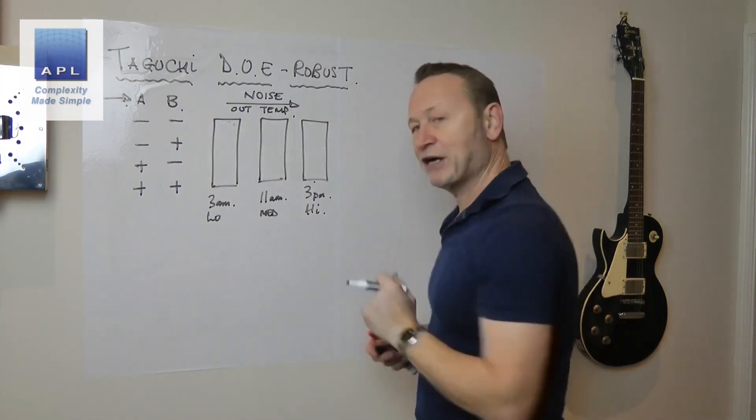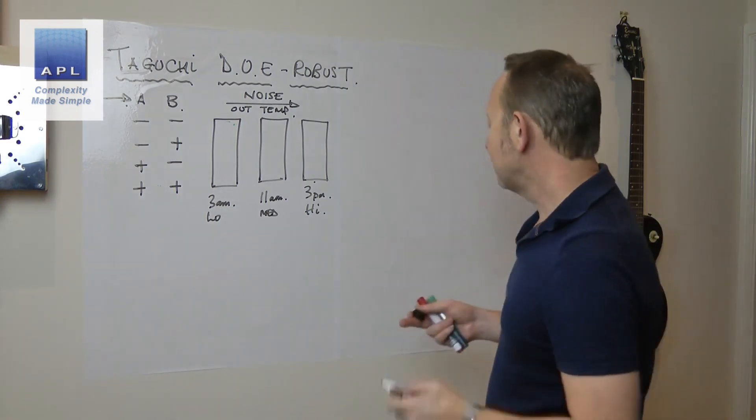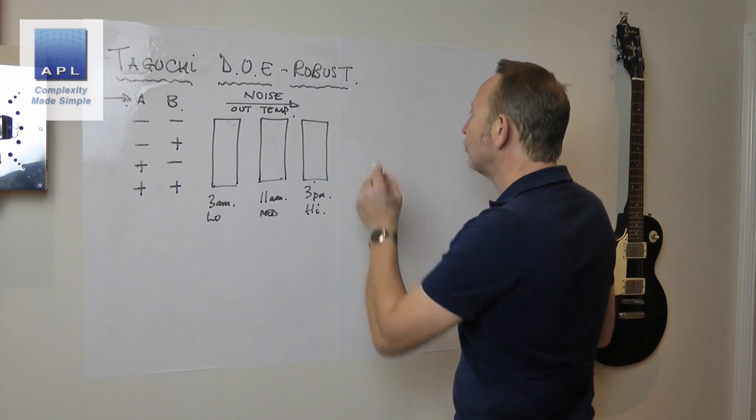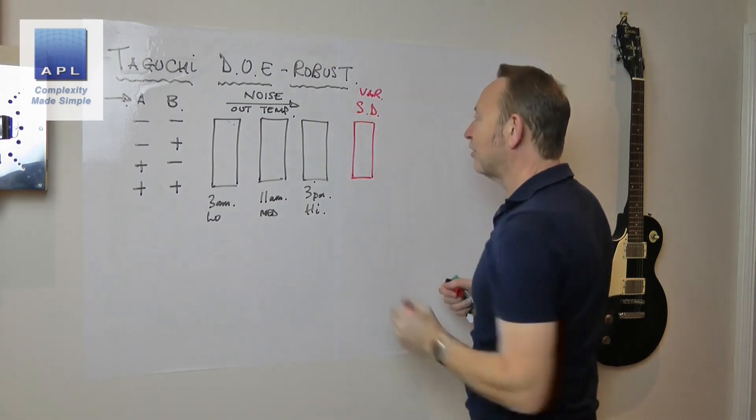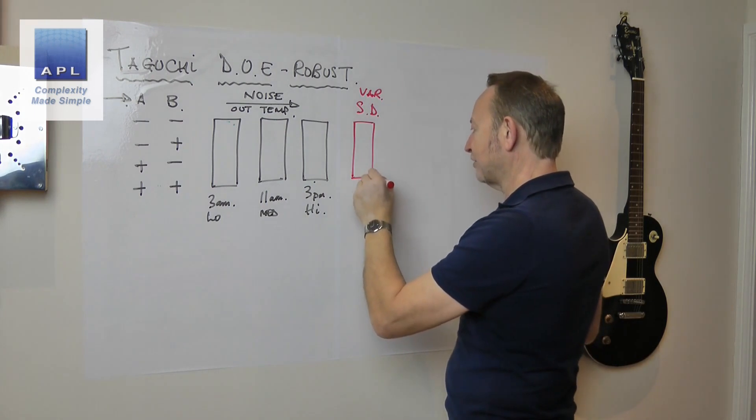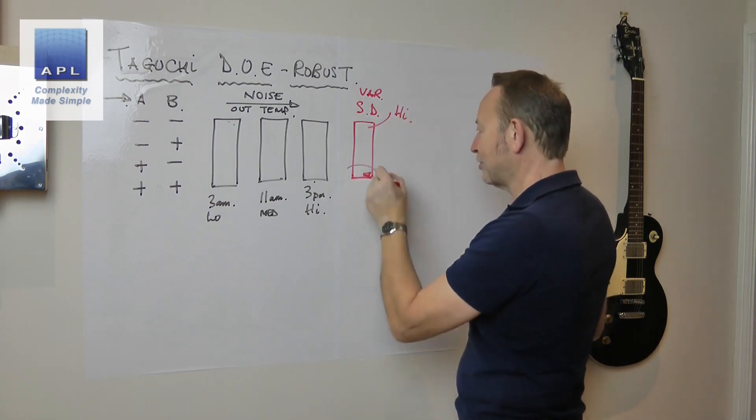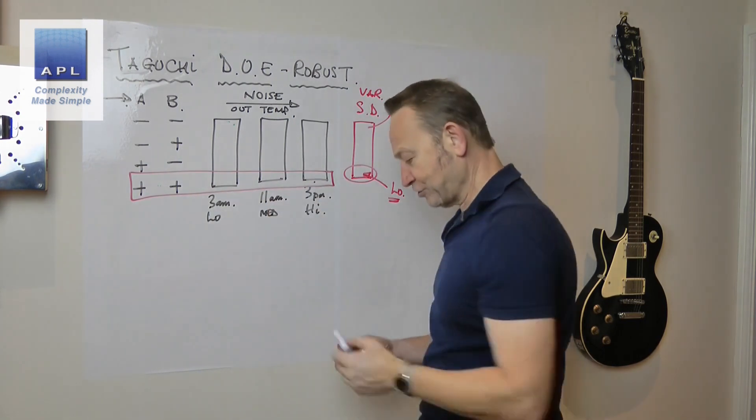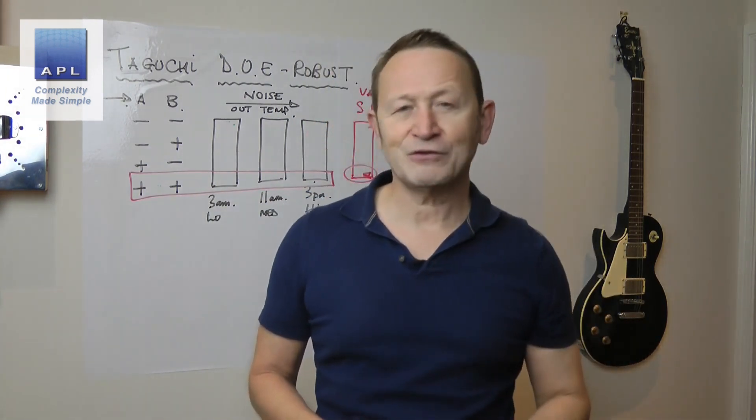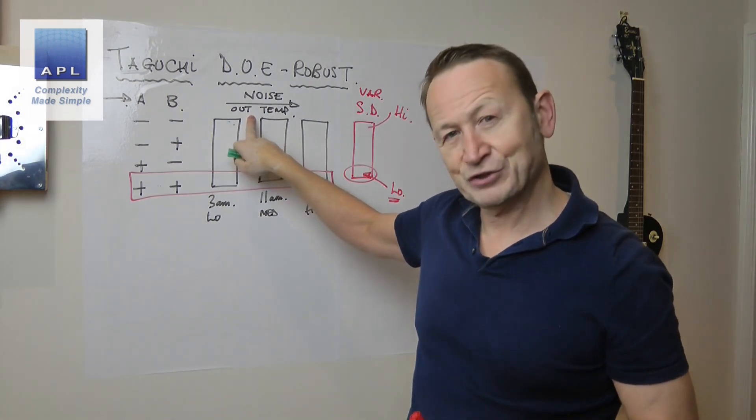So we've allowed noise this way across the data table, something that you would never do normally if you're doing a normal DOE. Then what we do on this end, we analyze the standard deviation. So in other words, we analyze the variability. And if we get changes in the variability, maybe low variability here, maybe high variability at the top. What this is telling us is that when you have these settings in play, there was very little variability across the three sets of data. And if there was very little variability across the three sets of data, that setting is more robust to outside temperature.